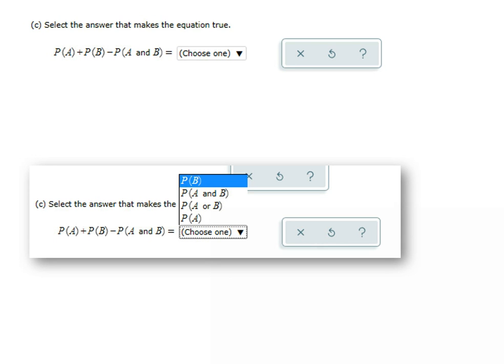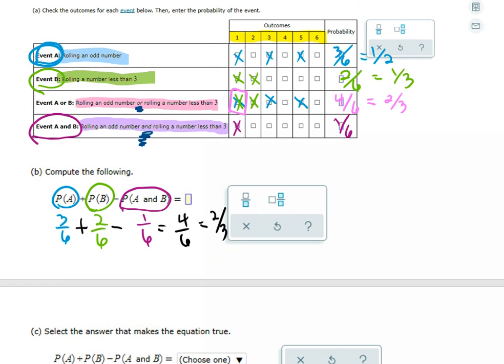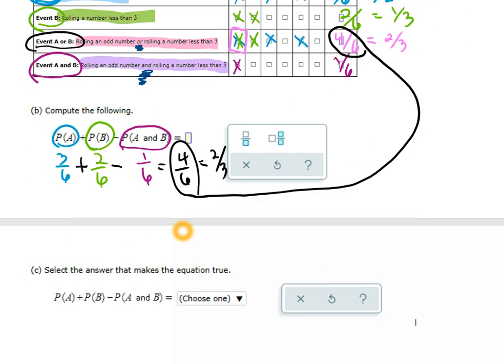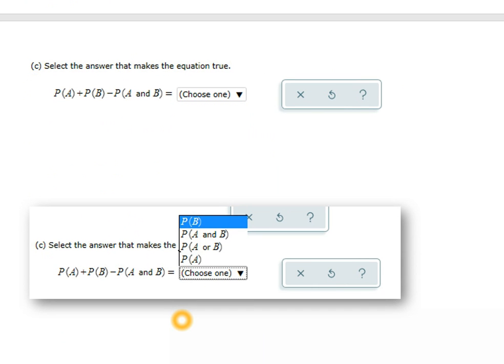And when you look at it, the answer that we got was this four sixth right here, which when I go back and look right here, that was a four sixths or two thirds. But that came from event A or event B. So this actually just kind of proves a formula. So my answer would be this one - you would click on A or B.